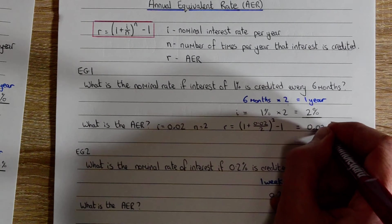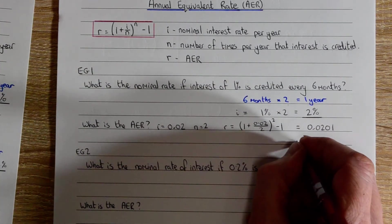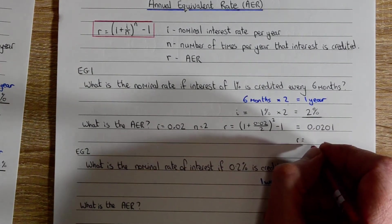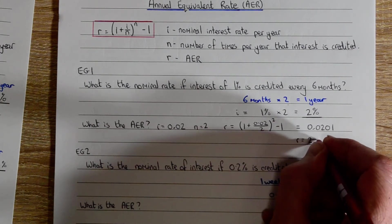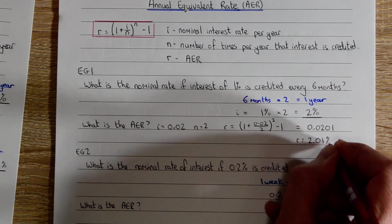So we can calculate R, and that equals 0.0201. So that's it as a decimal. To convert it into a percentage, that is 2.01%.